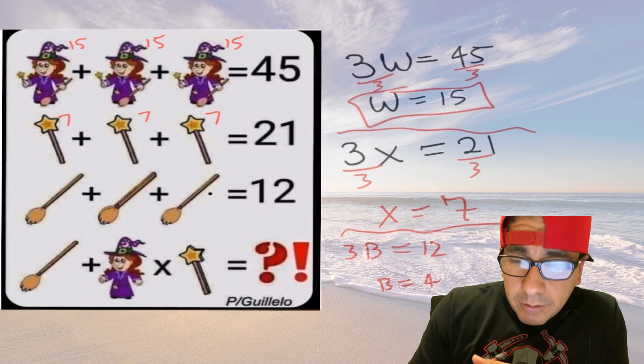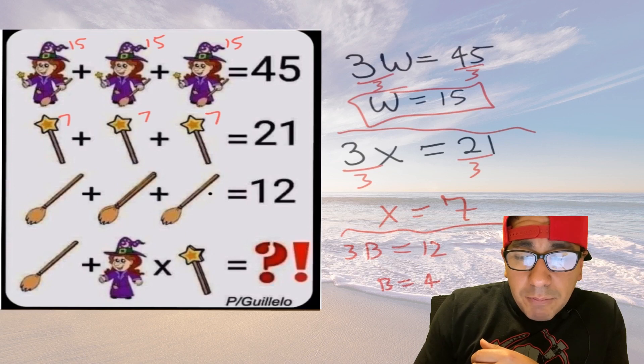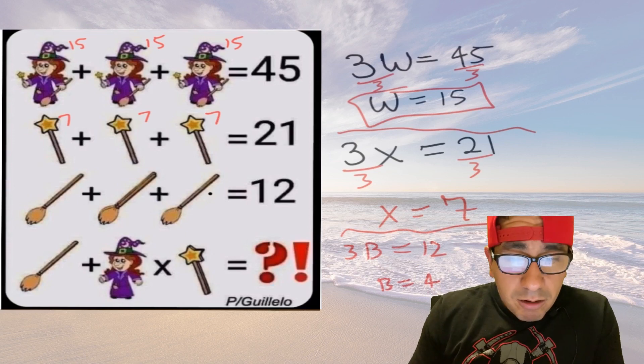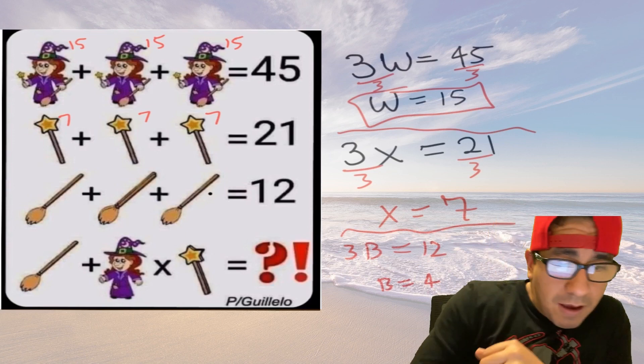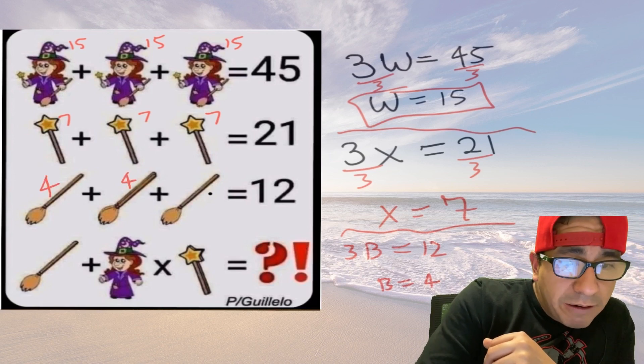And again you could divide both sides by three and you get B equals four. And now let me write that in, so we got a four here, four there, here four there, four everywhere.